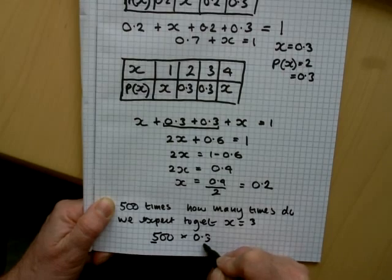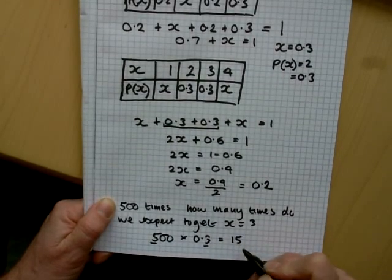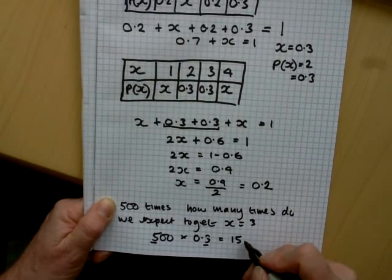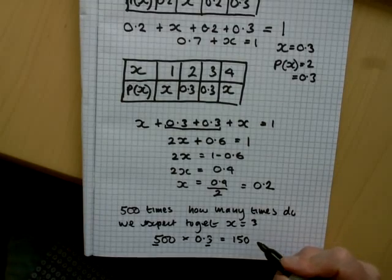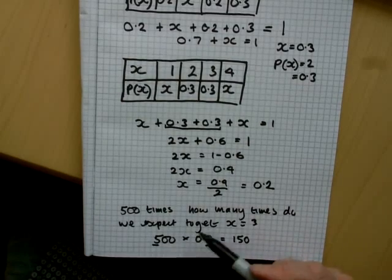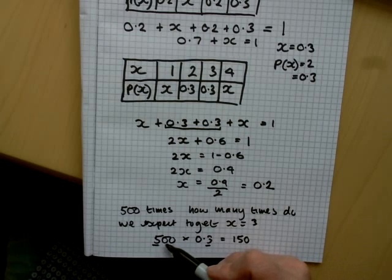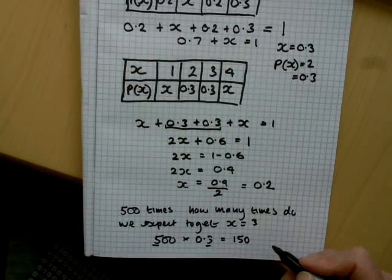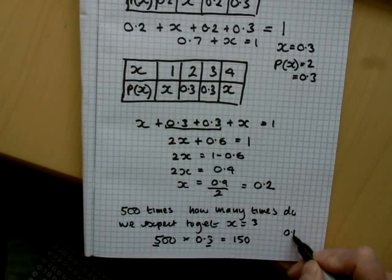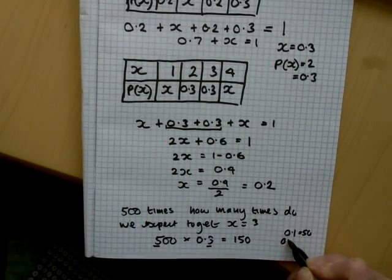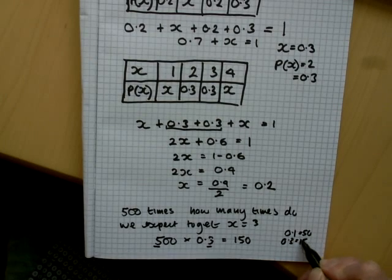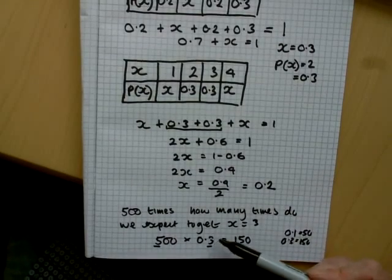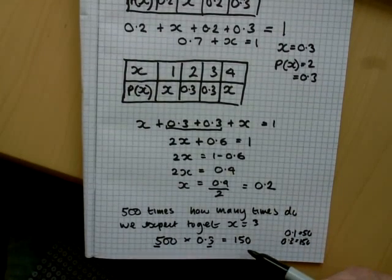5 times 3 is 15, but it's going to be 150. One way to see this: 0.1 is a tenth, and a tenth of 500 is 50. So 0.3 will be 150. You can think of it as 3 fives making 15 with the decimal point shifting, giving you one zero on — so the answer is 150.